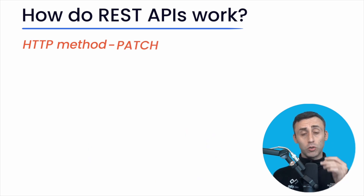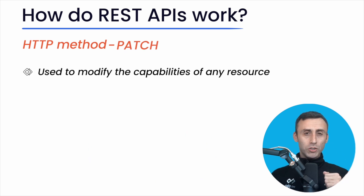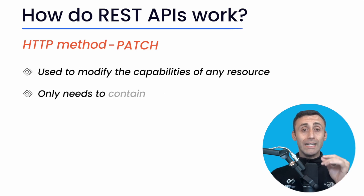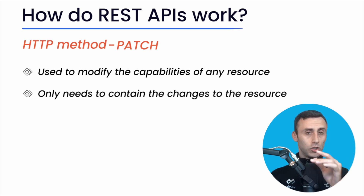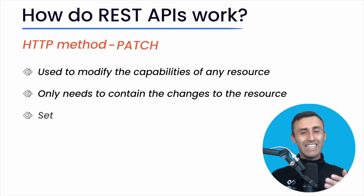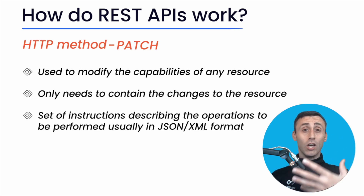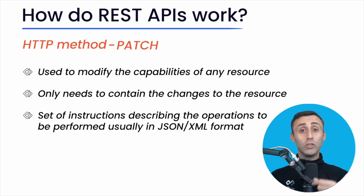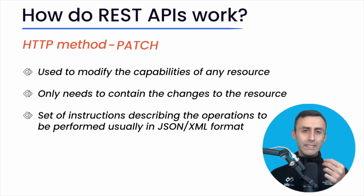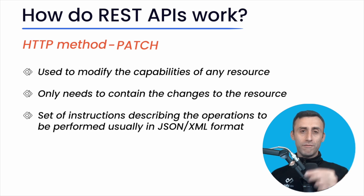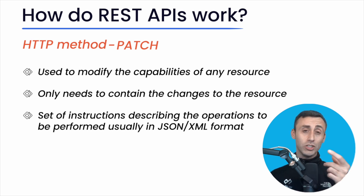PATCH: It's used to modify capabilities. The PATCH request only needs to contain the changes to the resource, not the complete resource. This resembles PUT, but the body contains a set of instructions describing how the resource currently residing on the server should be modified to produce a new version. This means the PATCH body should not just be a modified part of the resource, but in some kind of patch language like JSON Patch or XML Patch.